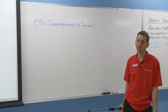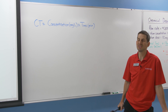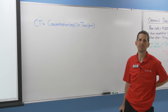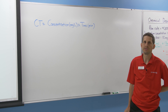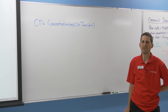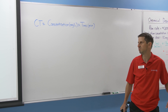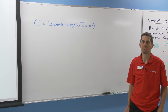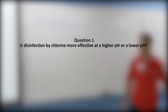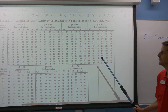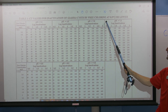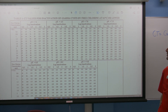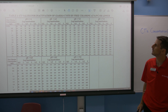Obviously more concentration or more time means more disinfection. We're going to look at the CT tables and look at some of the trends that come out of them, to show how you can use these tables as a tool for understanding the relationships around effective disinfection. We're going to look at Table 1, which is the CT values for inactivation of Giardia by free chlorine at 0.5 degrees Celsius or lower — so it's cold water treatment.